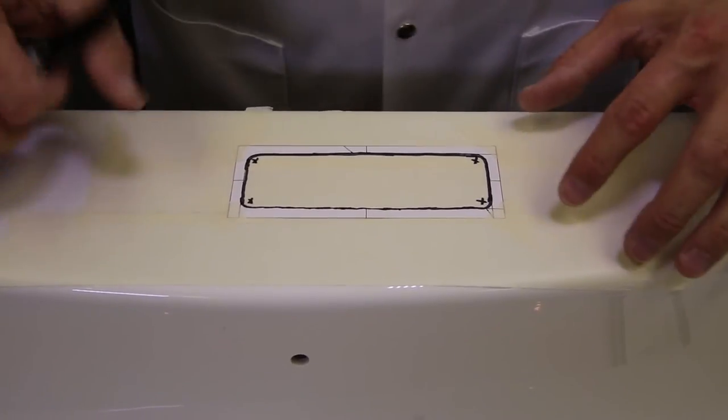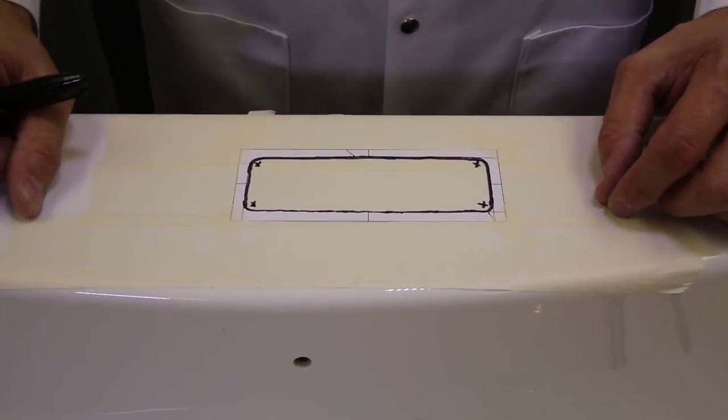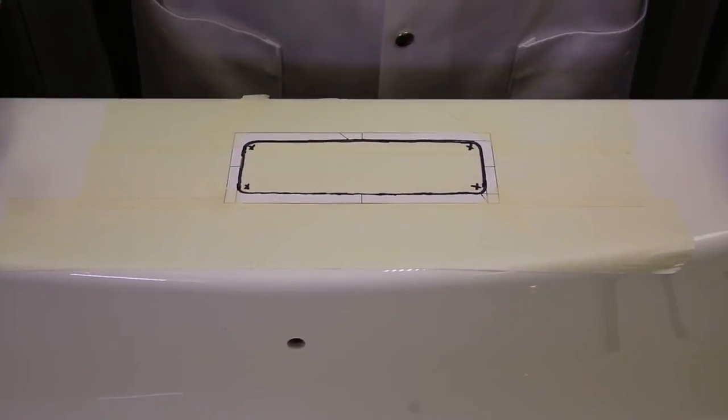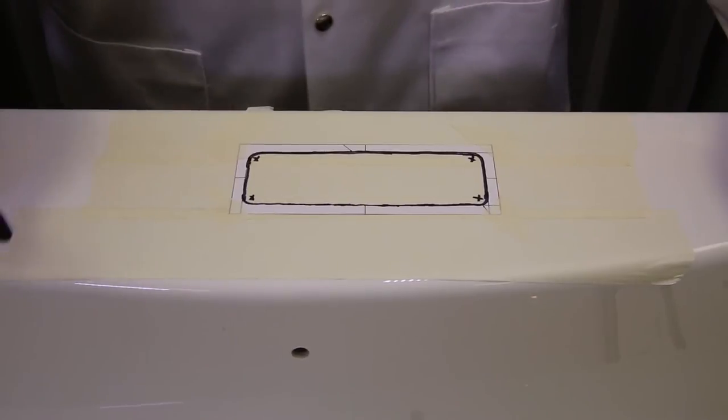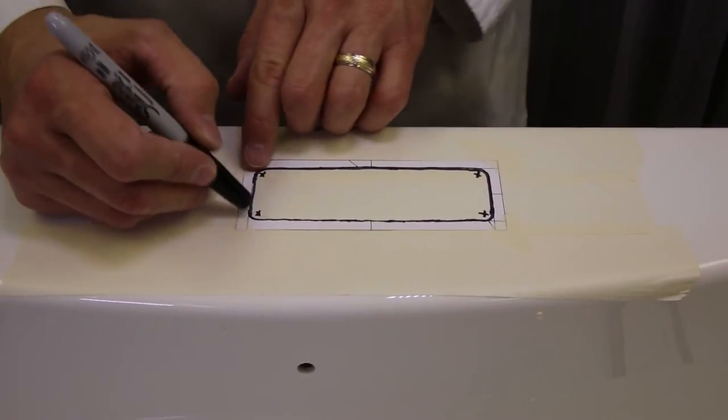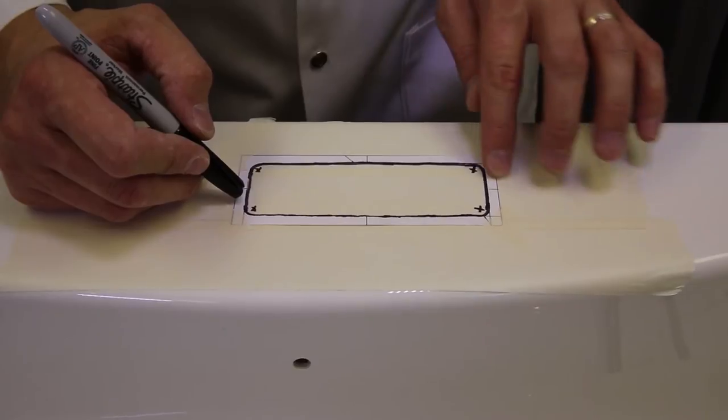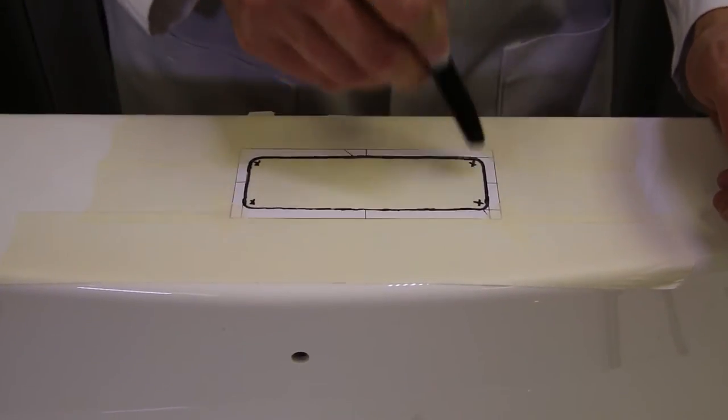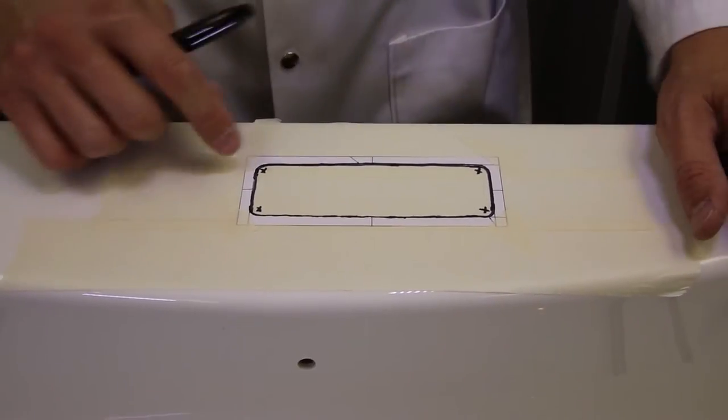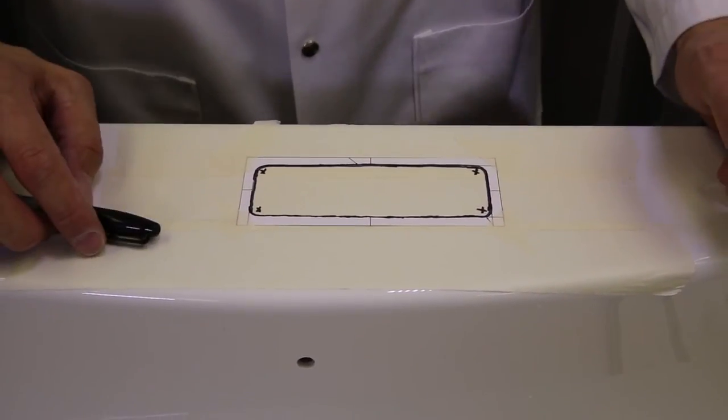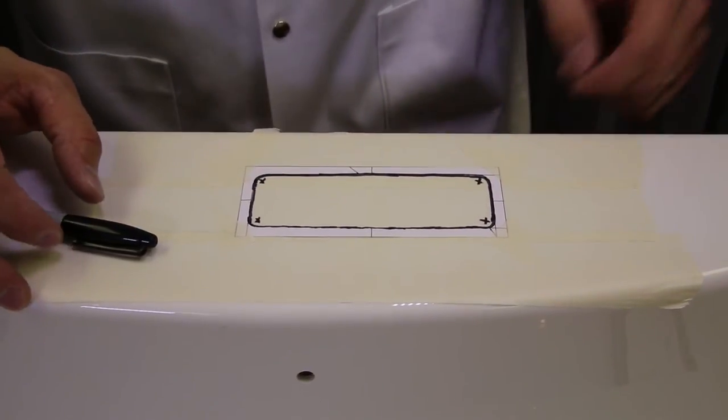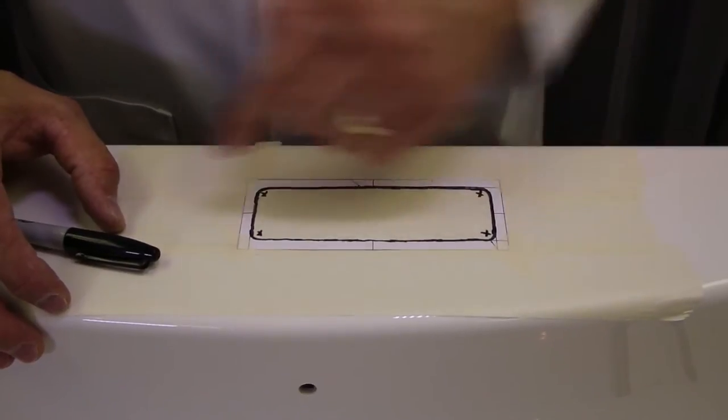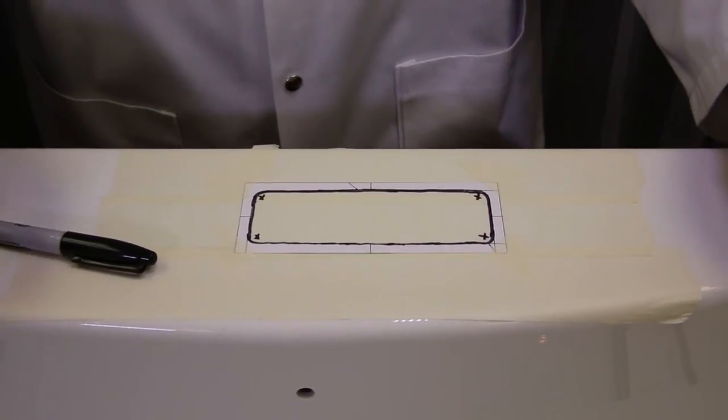And after that, I put my template on the deck of the tub, on the masking tape. I put some tape on each corner just to make sure it's not moving. And I took the marker and I just follow the inside line of my template. And also, I marked on each corner, and this is for my drill, to create my four holes on each corner, because it will be easier to use the jigsaw to put my blade in the deck of the tub and cut the hole for the keypad.